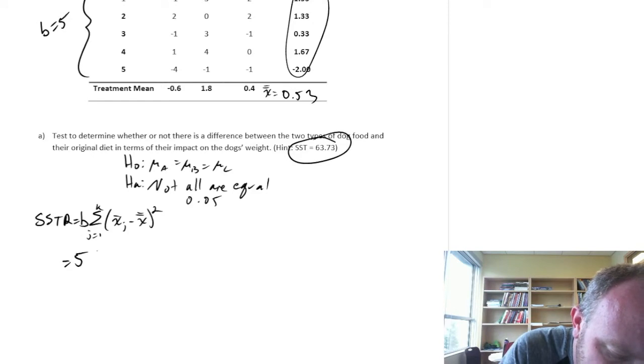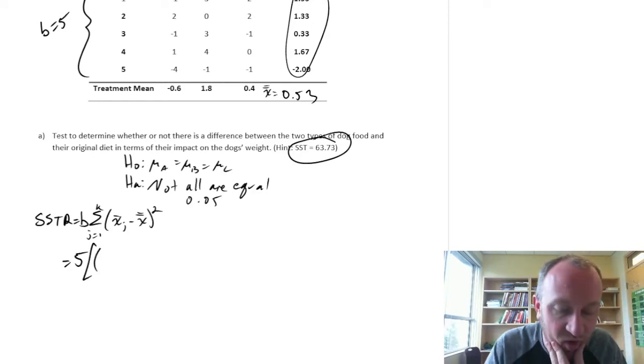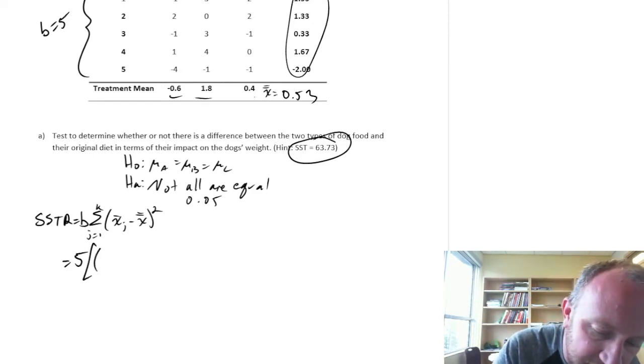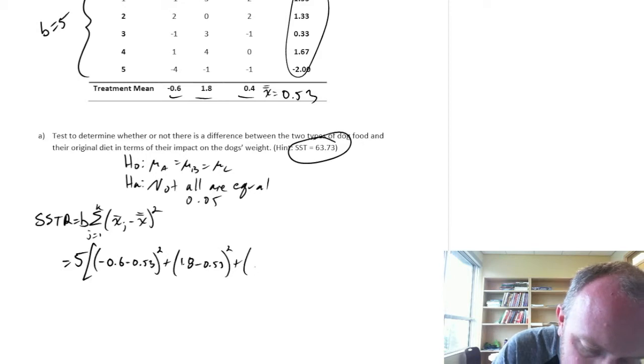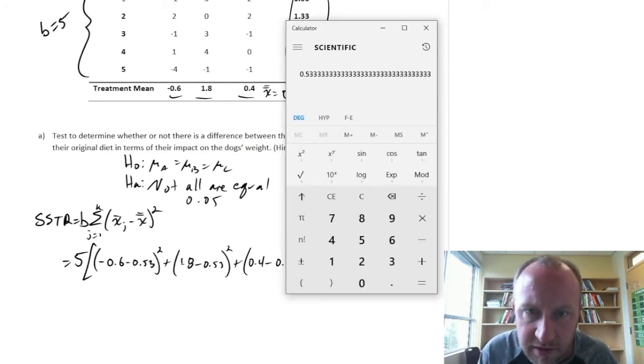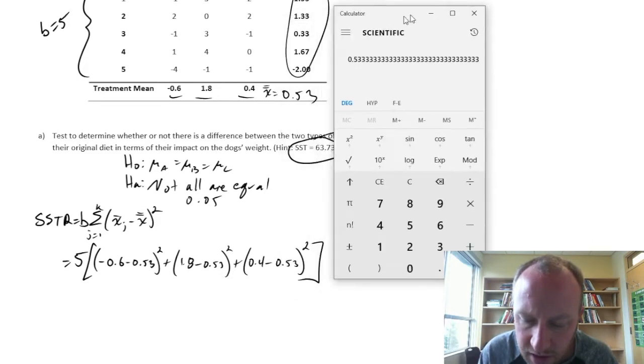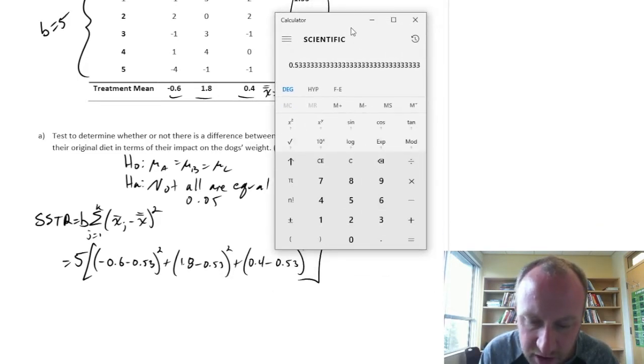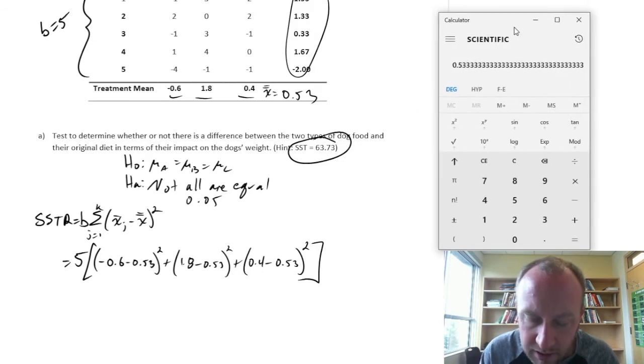So let's go ahead. So B is 5. And now we'll go through all of these differences with these three treatment means. So minus 0.6 minus 0.53 squared. 1.8 minus 0.53 squared. And 0.4 minus 0.53 squared. Okay, I'll get my calculator. You can always fast forward through these tedious calculations if you want. They're not the most entertaining part of the process to watch. Okay, put it right over there.